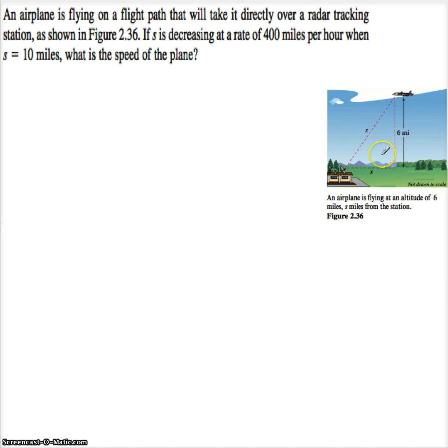Well the first thing you need to do is identify that you have a right angle here. So you know you have Pythagoras that you need to use. So I know that S squared is equal to X squared plus 6 squared. And I know that because I'm looking at this picture right here and it says it's traveling at an altitude of 6. It wasn't in the problem but it's in the diagram. So I know if I solve this for X, X is going to equal the square root of S squared minus 36.